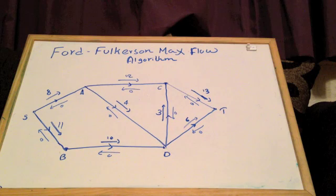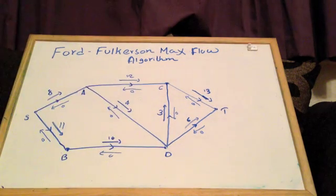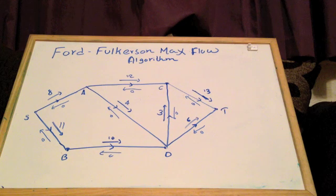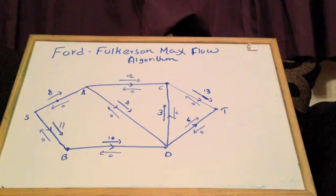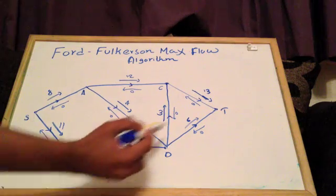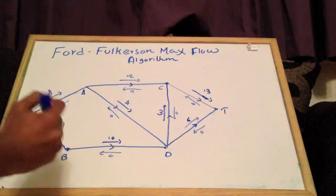Hi everyone. In today's lesson we will be going through the Ford-Fulkerson max flow algorithm. As you can see in this diagram, I have drawn a capacitated directed network. Each forward arrow indicates how much flow I can push through, and the backward arrow indicates how much flow has already been pushed. The forward arrow identifies the amount by which flow along the arc can be increased; the backward arrow identifies the amount by which flow can be reduced. Each flow augmenting path starts at S and ends at T, and you may use both forward and backward arrows given there is capacity in that direction.